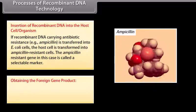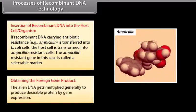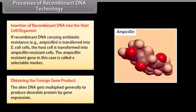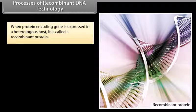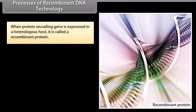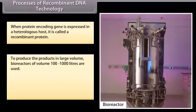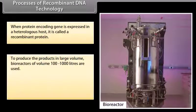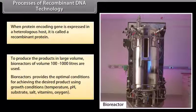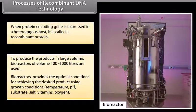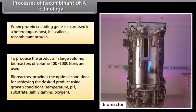Obtaining the foreign gene product. The alien DNA gets multiplied generally to produce desirable protein by gene expression. When protein encoding gene is expressed in the heterologous host, it is called a recombinant protein. To produce products in large volume, bioreactors of volume 100 to 1000 liters are used. Bioreactors provide the optimal conditions for achieving the desired product using growth conditions.